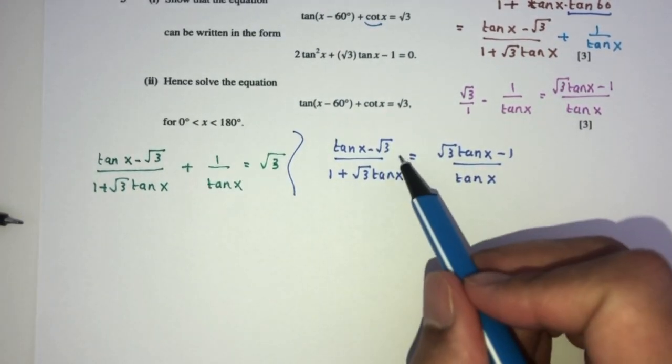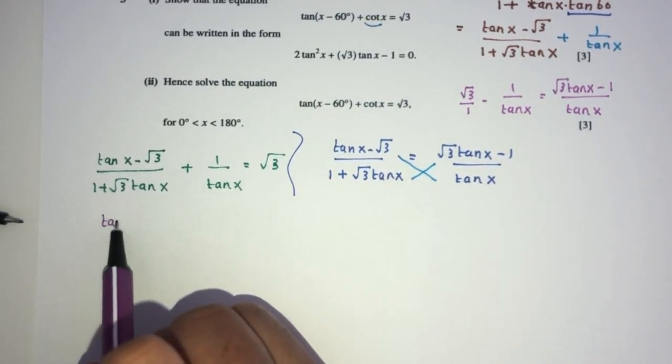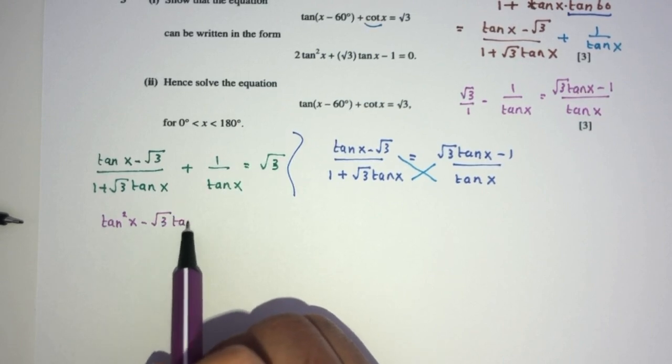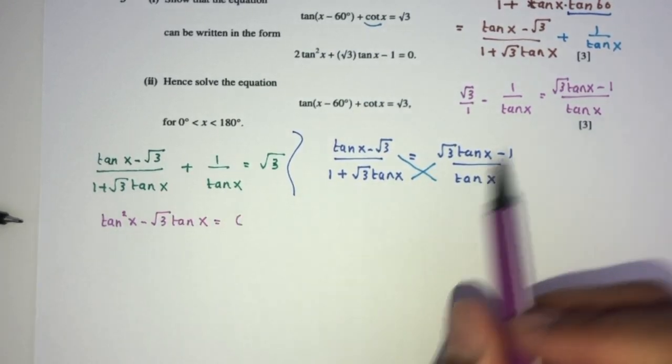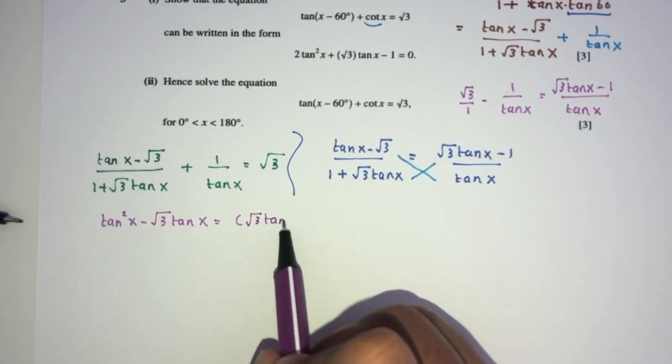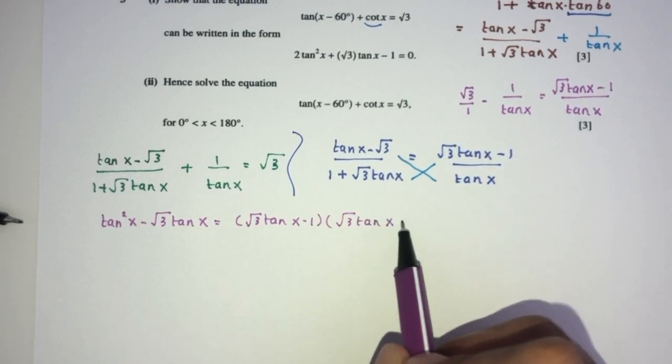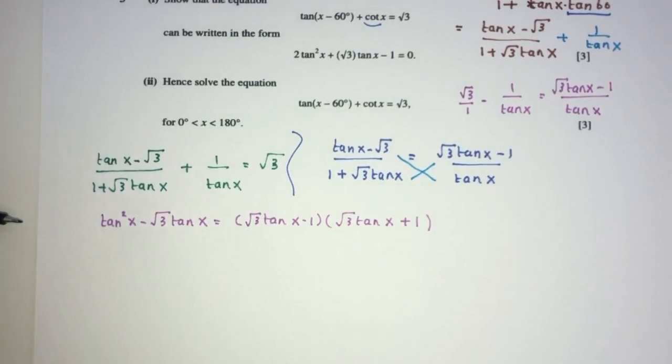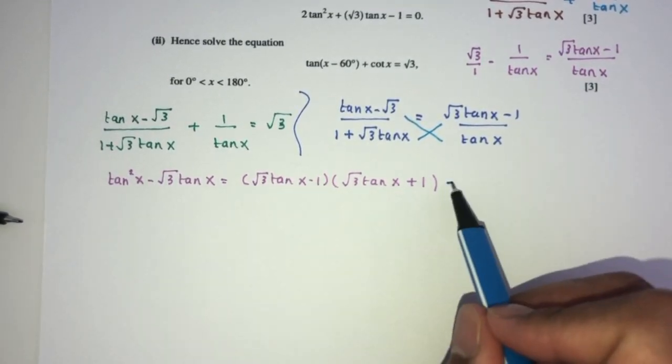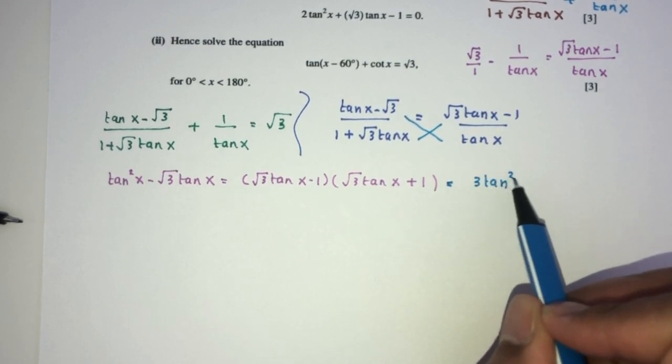Now we can just cross multiply and see what happens. This will become tan squared x minus root 3 tan x equals, here we have the value of root 3 tan x minus 1, and here it is root 3 tan x plus 1. Now as you can see, this one is simply the difference of squares. So a minus b times a plus b, that will be difference of squares, that should be 3 tan squared x minus 1.